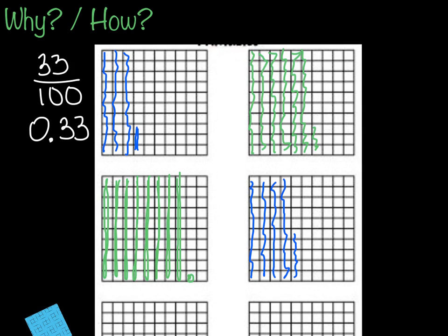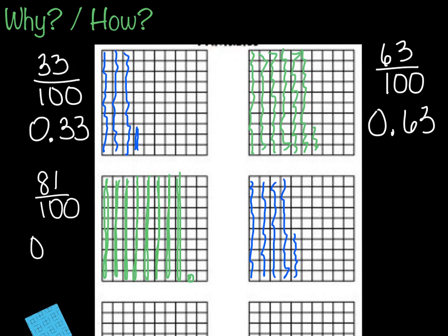Let's take a look at the bottom left. We've got 10, 20, 30, 40, 50, 60, 70, 80, 1. So there are 81 out of 100 shaded, and I would write that as 0 and 81 hundredths.